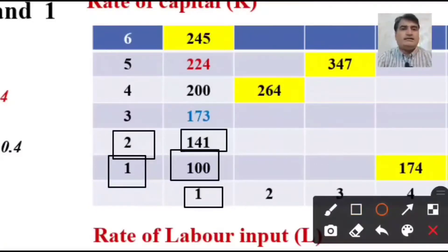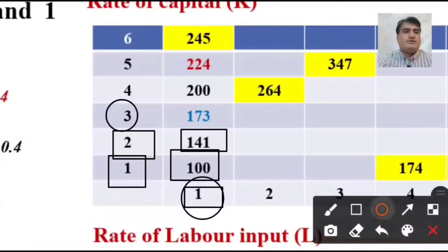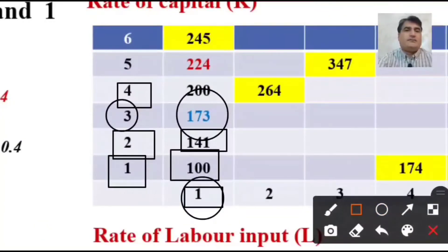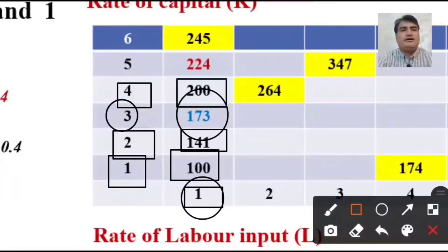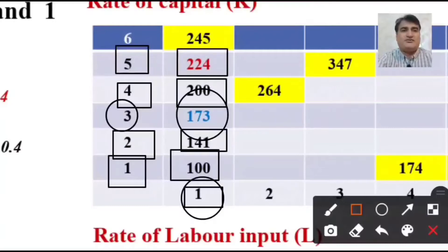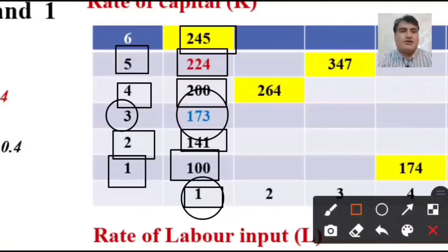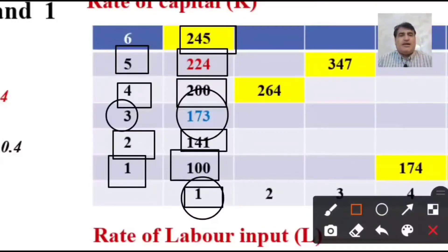By employing 3 units of capital and 1 unit of labor, the producer receives 173 units. By employing 4 units of capital and keeping 1 unit of labor constant, the producer receives 200 units. With 5 units of capital and 1 unit of labor, the producer receives 224 units. Using 6 units of capital and 1 unit of labor, the producer obtains 245 units. We have analyzed each output received from different input combinations.